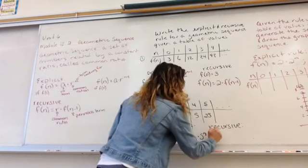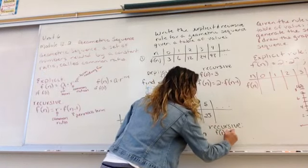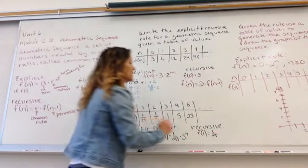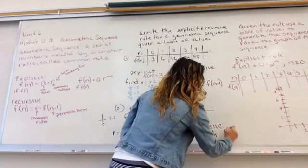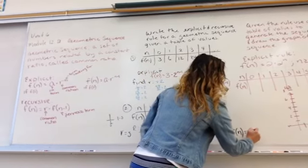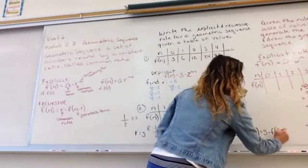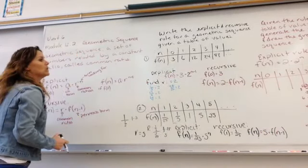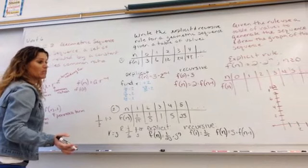For the recursive, we need to state the first term, that f sub 1 is 1 over 25, because we're telling the pattern where to start. And then it's f sub n equals our common ratio of 5 times our previous term, f of n minus 1. Same thing we did with arithmetic.